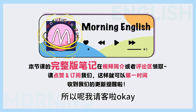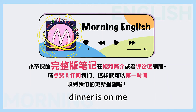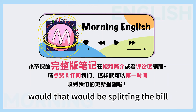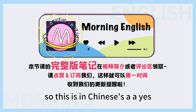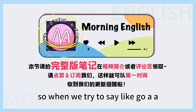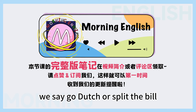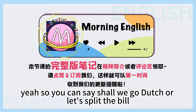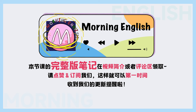今天是你的生日，所以呢，我请客啊。 So what's the opposite of 'dinner is on me'? That would be splitting the bill, which is sometimes known as going Dutch. In Chinese, is that AA制? Yes, AA制，对对对。 So when we say go AA, we don't say that — we say go Dutch, or split the bill. So you can say: shall we go Dutch? Or: let's split the bill. 两个都是可以说的。